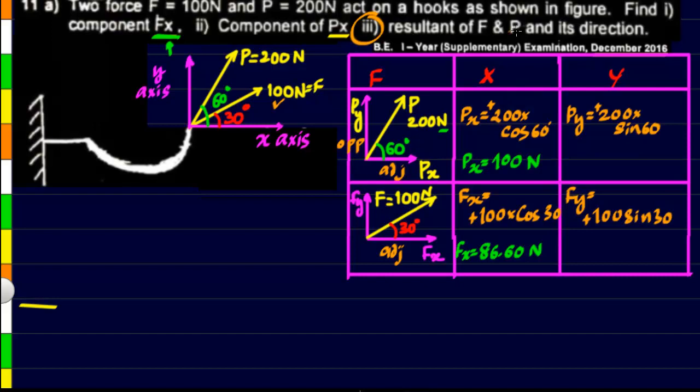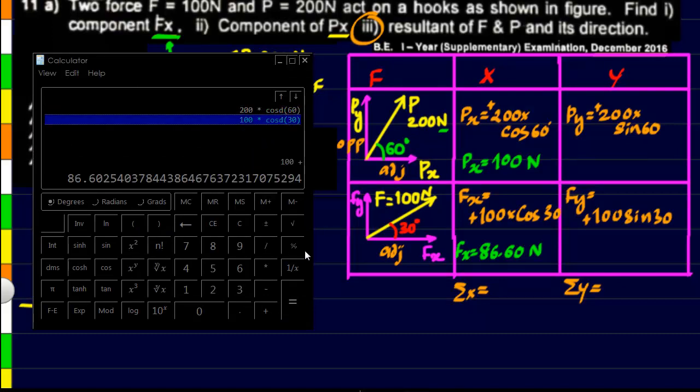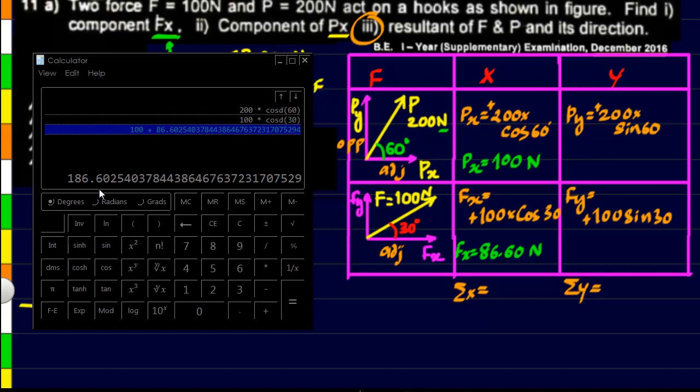And finally coming to the third point, we have been asked to find the resultant of F and P. So for that we will have to find the sum of x components and the sum of y components. So let us go ahead and find it. So we just have to take this value and add it to this value.